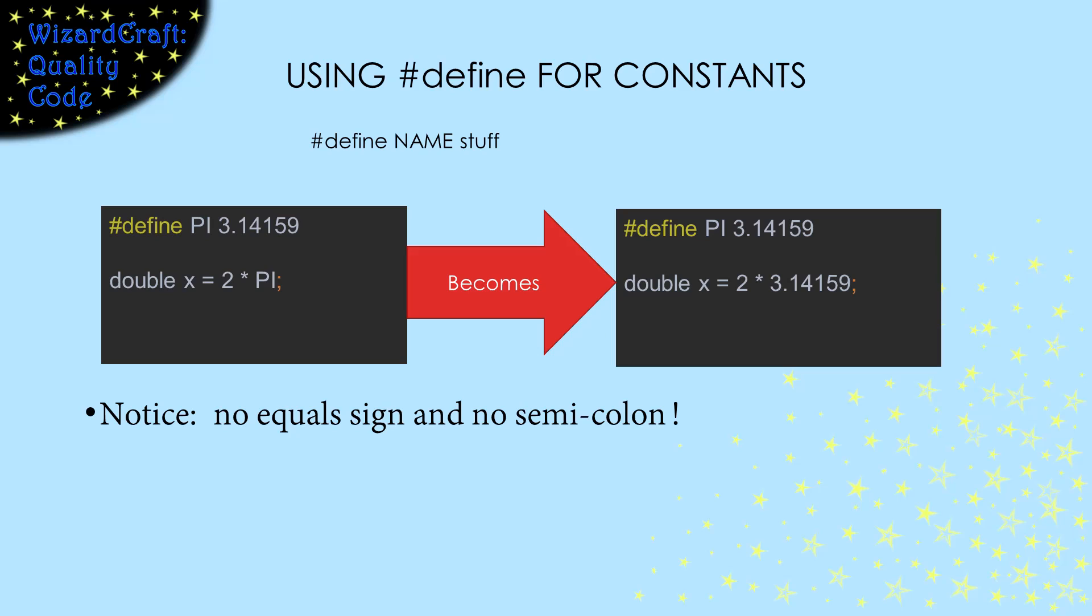The simplest and most common use of pound define is to define constants. In pound defines, spaces really matter. The thing that will be replaced is always the first space-separated token after the pound define. So in this define, pi will be replaced by 3.14159. So we've essentially declared a constant, but there is no assignment statement and no semicolon. And pi isn't a variable. It doesn't take up any place in memory. It's just a token that will get replaced by the string 3.14159.